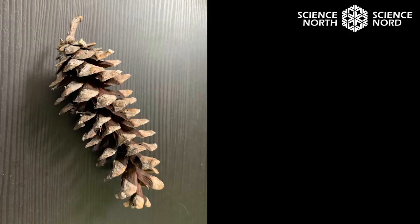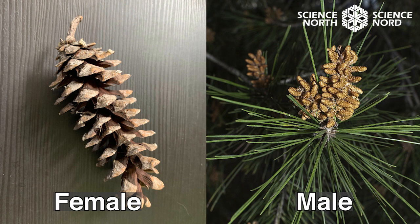Adult trees complete the life cycle by producing seeds of their own. Most trees actually have both male and female cones. The cones we classically think of as pine cones are actually the female cones — this here is a female eastern white pine cone, and this is what contains the seeds. But the seeds need to be fertilized, and that's where the male cones come in. Male cones are pollen cones and they release pollen carried by the wind. When pollen ends up in the female seed cone, you have a fertilized seed, which completes the life cycle and grows into new trees.